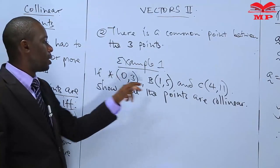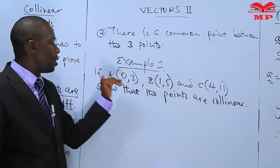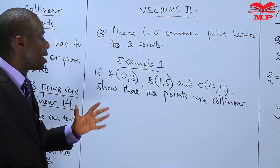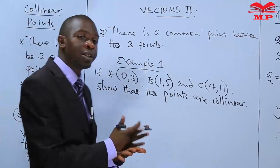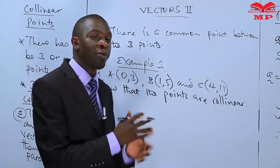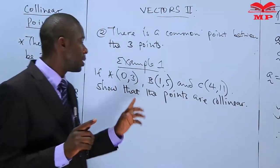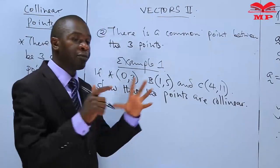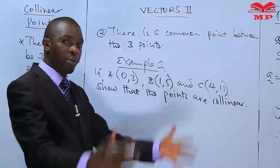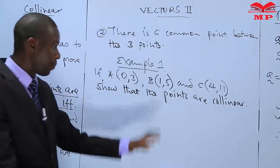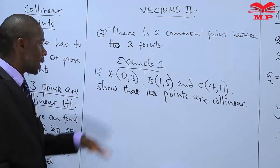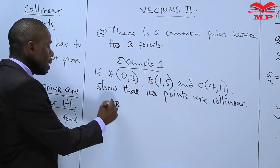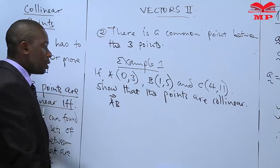What I want us to realize is that for these three points, we have agreed on two conditions for collinearity: one, the points have to be parallel — we have to get two sets of parallel vectors — and two, we have to get a common point between them. So we will test with vector AB.